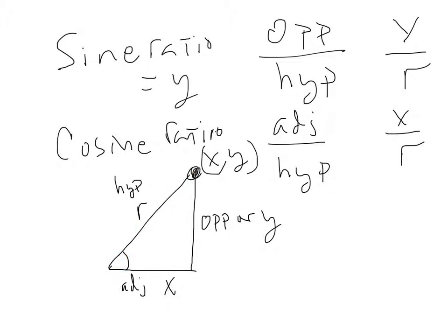And then for the cosine, the cosine is the adjacent side over the hypotenuse or the x side over the radius. And we also learned that the cosine is the same as the x coordinate if the radius is 1.